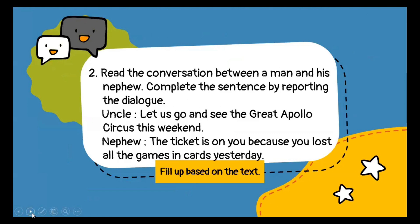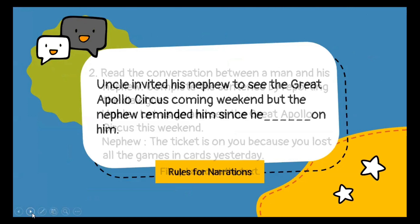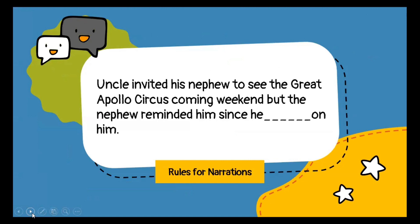The second type of question will be based on a conversation, so rules of narration are to be kept in mind. Uncle and nephew are in conversation. Uncle says, 'Let us go and see the great Apollo circus this weekend.' The nephew says, 'The ticket is on you because you lost all the games and cards yesterday.' On the basis of this conversation, you have to fill in the blank: 'Uncle invited his nephew to see the great Apollo circus coming weekend, but the nephew reminded him since he dash on him.'